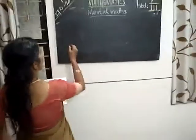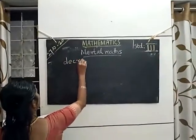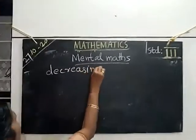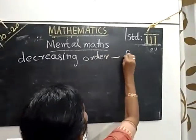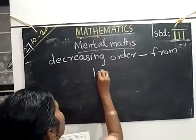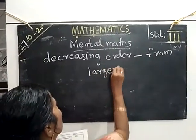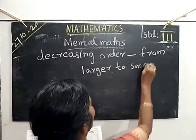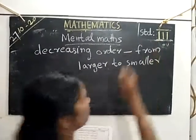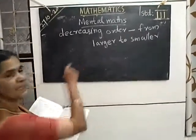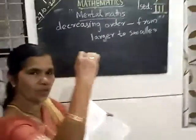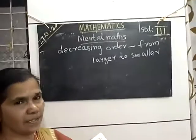Okay. Then, I will write in the decreasing order. Decreasing means from larger to smaller — from a larger number to a smaller number. That is decreasing. Understand?